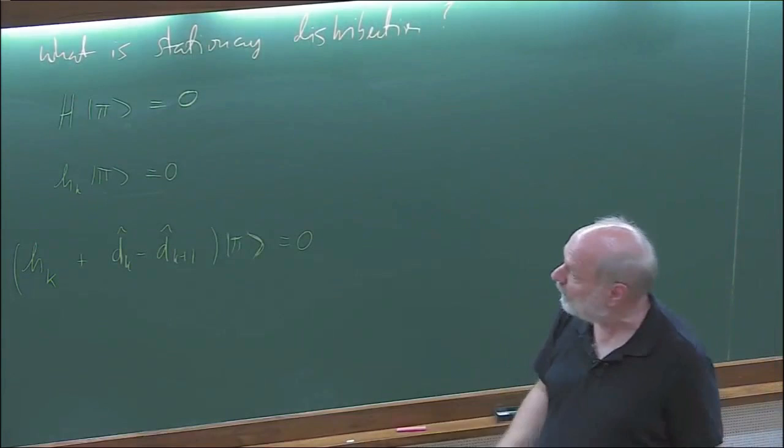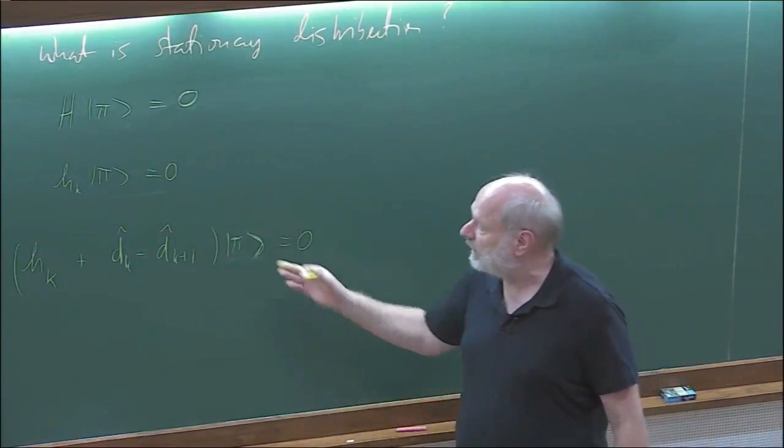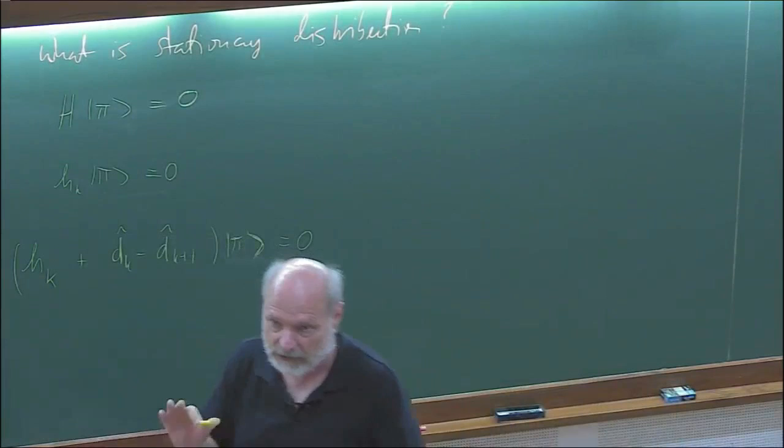How can one even begin? One has to begin by making some assumption about pi. The simplest assumption is that pi is just a tensor product. You will see that you can solve the problem this way for a particular choice of parameters, which I will show later.